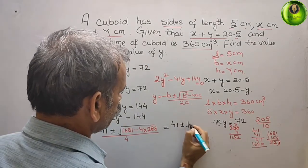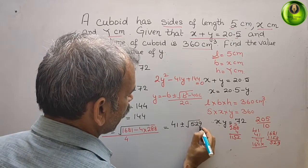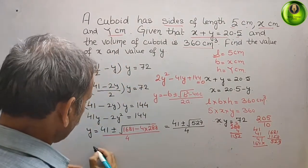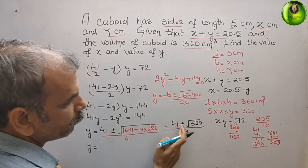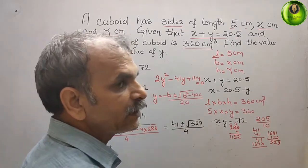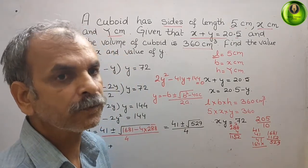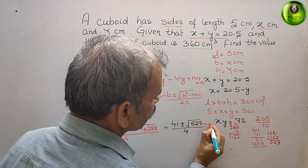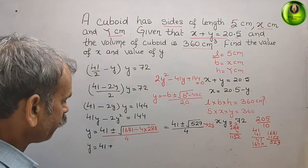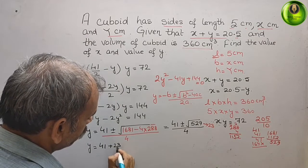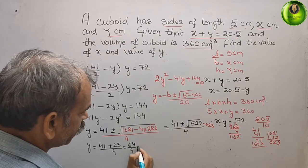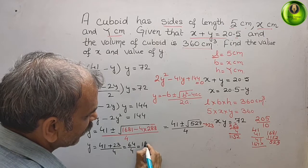529 is the perfect square of 23. Taking the plus case: y equals 41 plus 23 divided by 4, which is 64 divided by 4. Cancelling gives y equals 16.